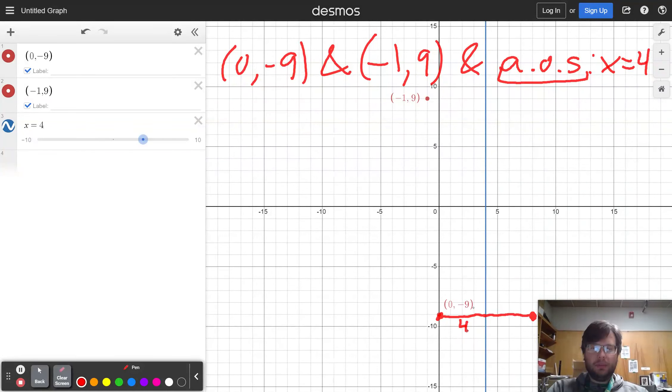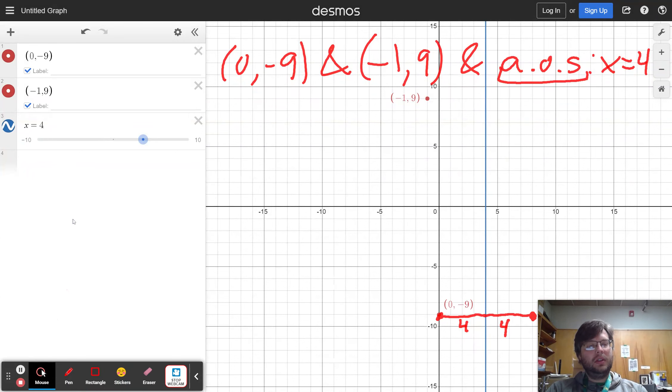this point down here has to be mirrored over equidistant to the other side. So because it's four steps to the left of the axis of symmetry, I know I need to move an equidistant to the right. And so now I know that I have another point of 8, negative 9 that has to be on my graph.